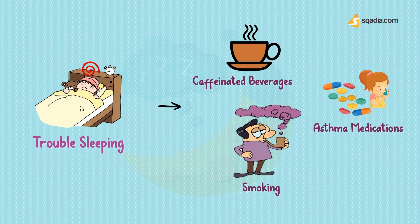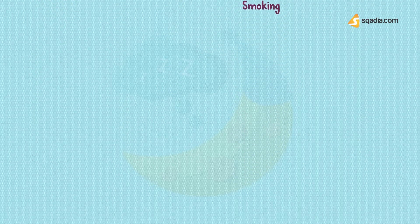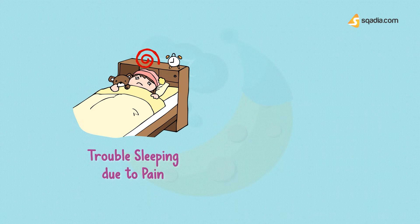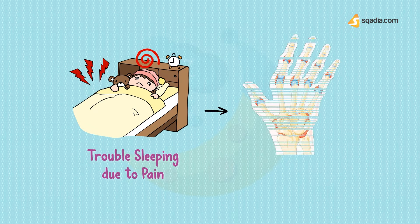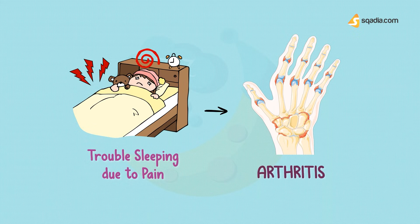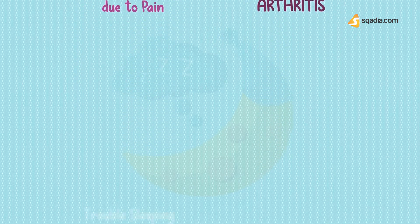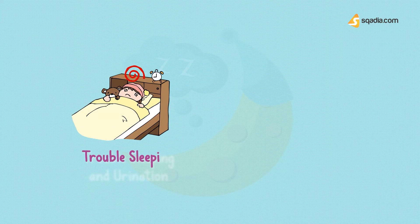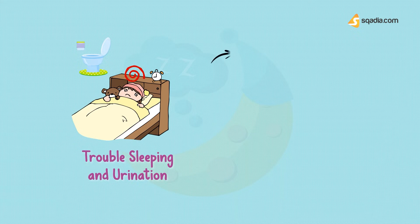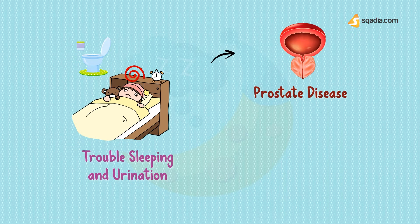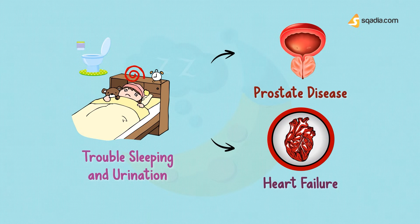If a patient experiences trouble sleeping because of pain, he might be having a pain-causing illness such as arthritis. If a patient experiences trouble sleeping because of the need to get up and urinate at night, he might be having an illness that causes night urination, like prostate disease or heart failure.